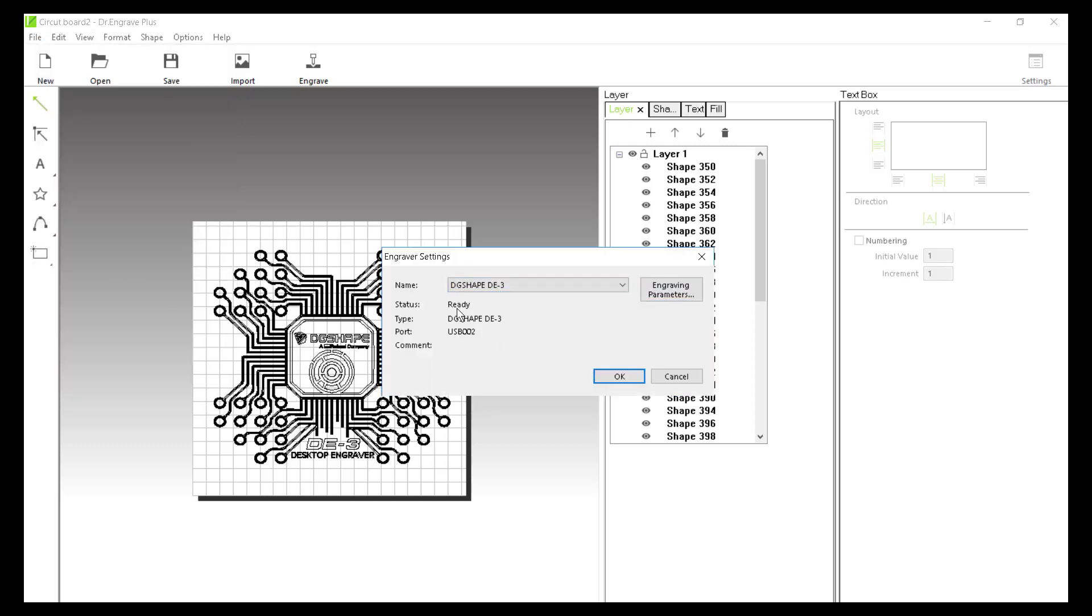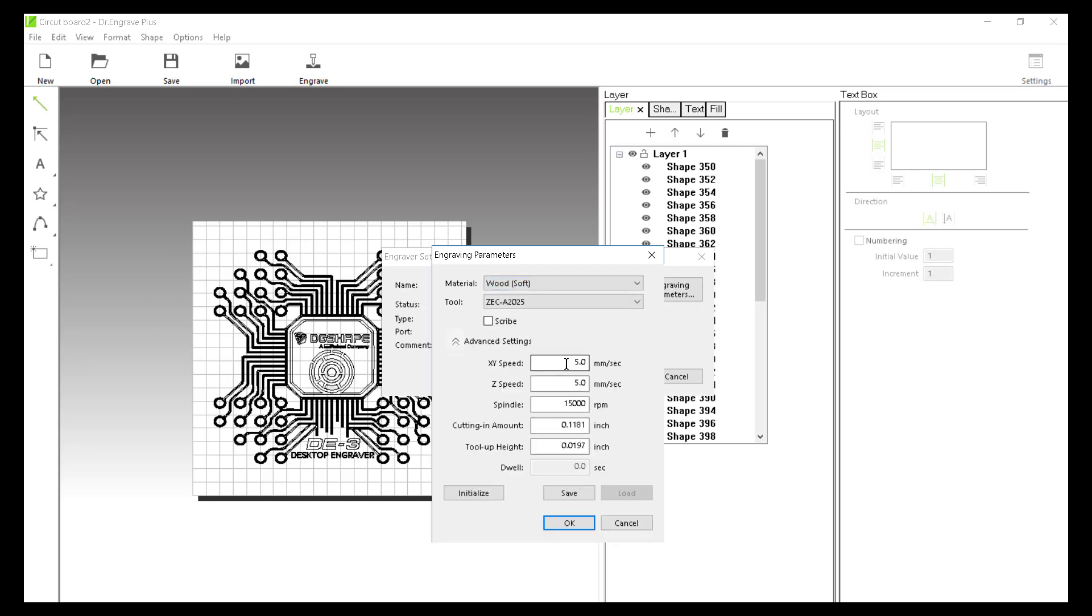I'm going to engrave our settings to make sure the DE3 is active and ready. Here's my tool, and I have a multitude of different materials that I can choose from. If yours isn't on here, then just find something that's close.